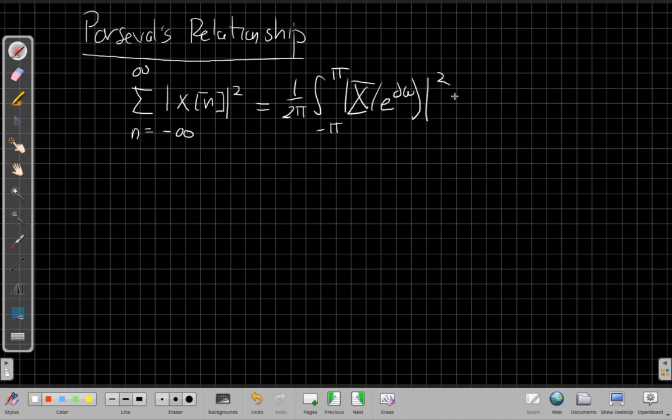So whether I add up the magnitude squared in time, which is the total energy in time, or I do the integral of the energy in frequency, this 1 over 2 pi is a bookkeeping detail. Don't get too hung up on it. But I have the same energy basically whether I add things up one sample at a time or one frequency at a time, whether I'm doing the bookkeeping either way, I get the same total energy.